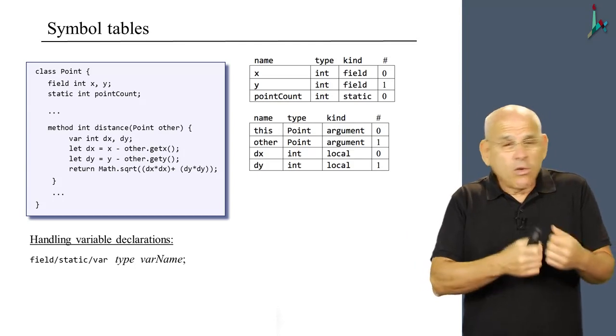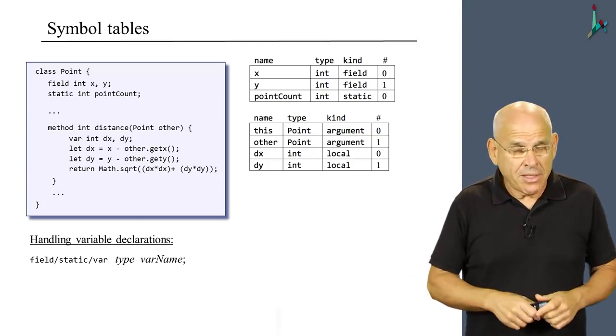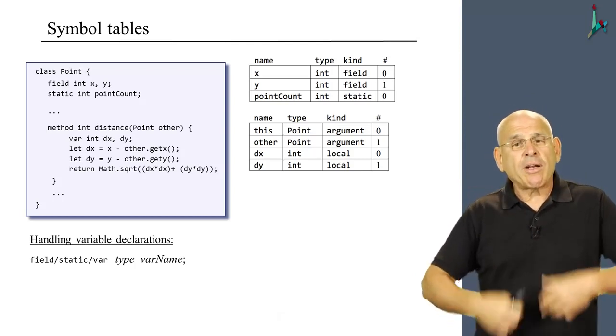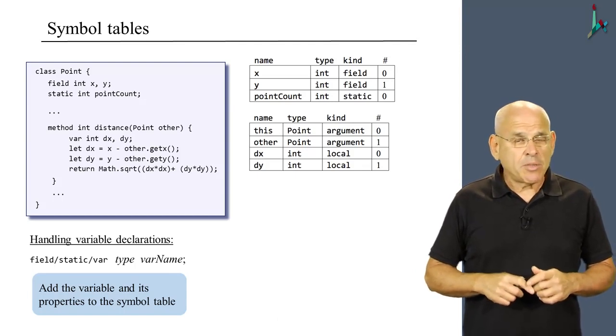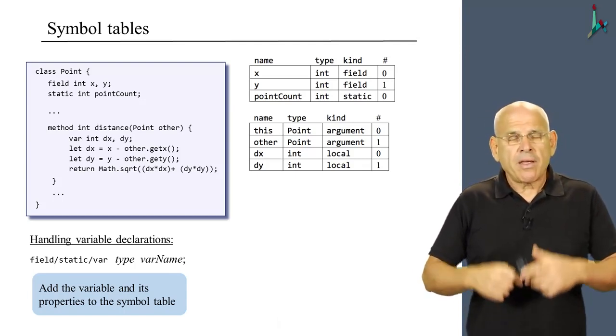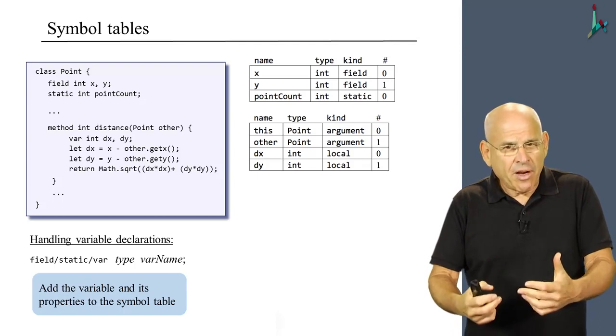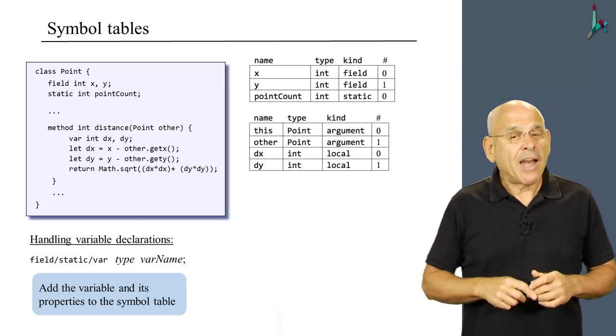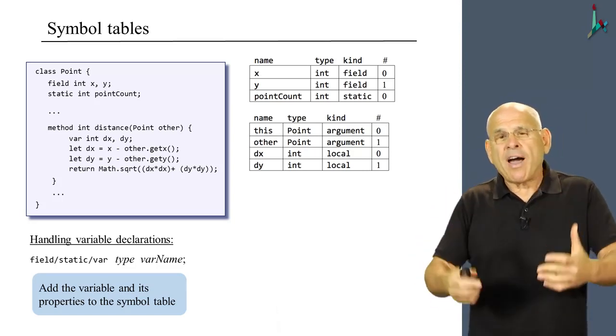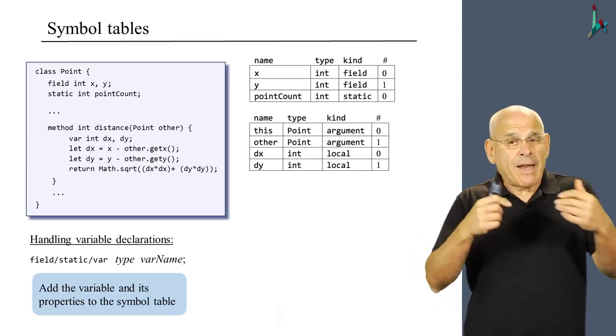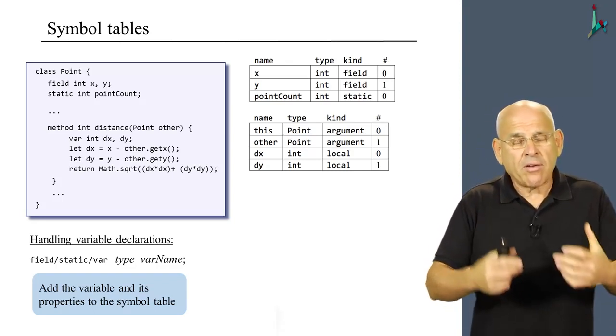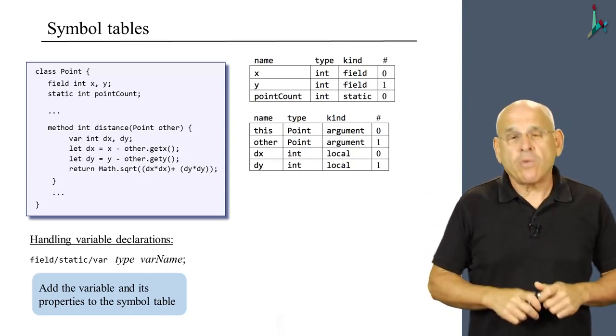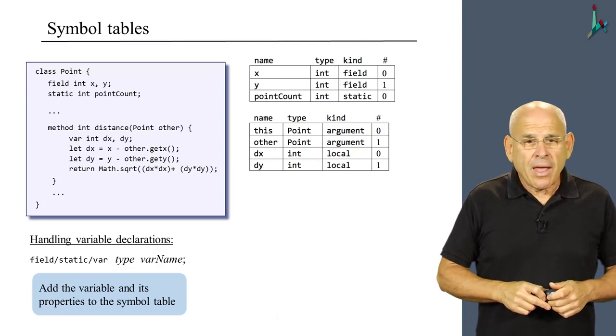Now, the code writer is going to encounter all sorts of variable declaration commands, of which in Jack we have three. We have either local variable declarations, field declarations, or static declarations. So whenever the code writer is going to encounter an instance of any one of these variable declaration categories, the code writer will elucidate from this statement all the important properties of the declared variable. And then the code writer will add this information to the respective symbol table.